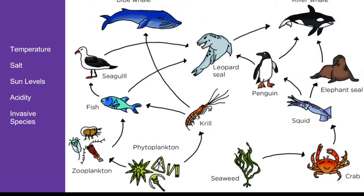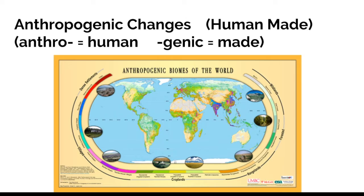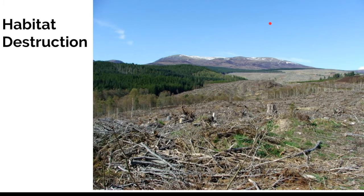However, large changes might permanently change the entire food web. In recent times, humans are a major contributor to change in ecosystems. We call these anthropogenic changes. Anthro means human, genic means made — so these are human-made changes.